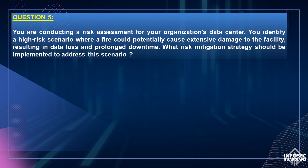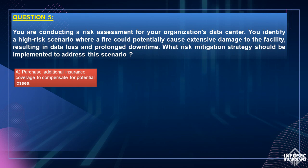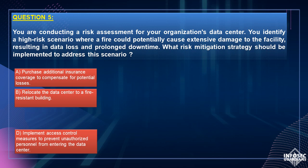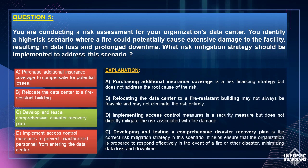Let us review each option one by one. Option A, purchasing additional insurance coverage, is a risk financing strategy but does not address the root cause of the risk. Option B, relocating the data center to a fire-resistant building, may not always be feasible and may not eliminate the risk entirely. Option D, implementing access control measures, is a security measure but does not directly mitigate the risk associated with fire damage. Option C, developing and testing a comprehensive disaster recovery plan, is the correct risk mitigation strategy in this scenario. It helps ensure that the organization is prepared to respond effectively in the event of a fire or other disaster, minimizing data loss and downtime. Hence, Option C is the correct answer.